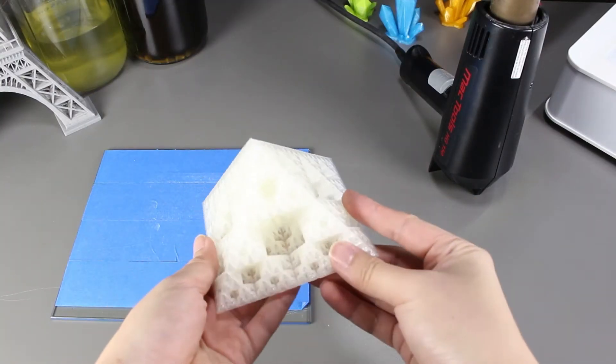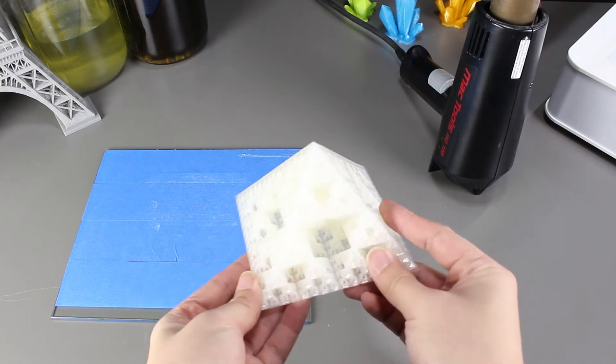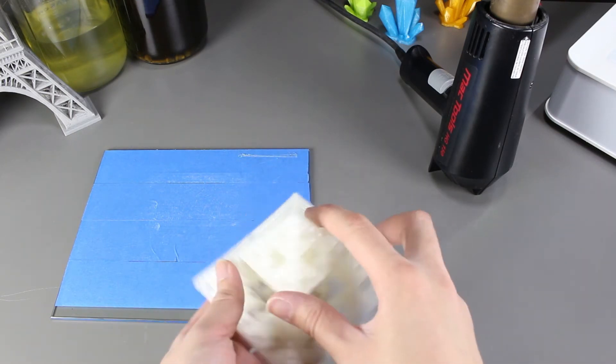That was actually easier to remove than the one we had before during the freezing experiment. Seems like this works.